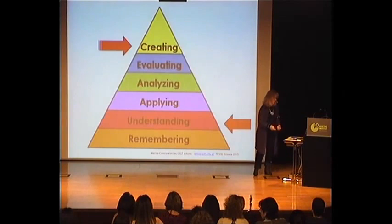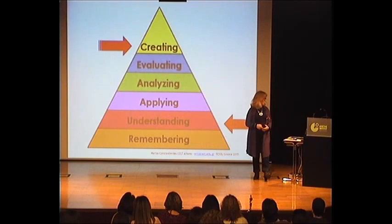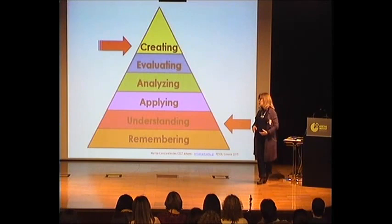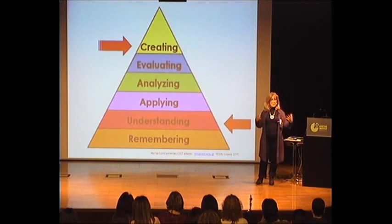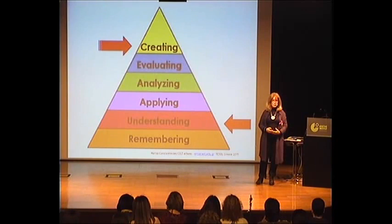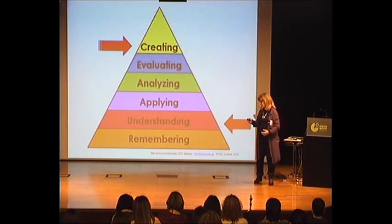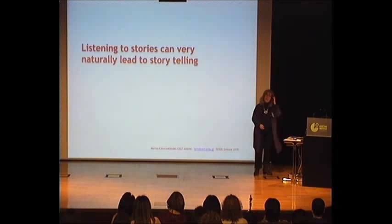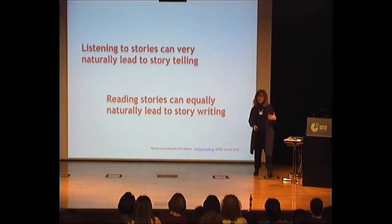If we look at Bloom's taxonomy triangle — which is an amended triangle — at the top you can see 'creating,' which used to be 'synthesis' but has recently been changed. At the bottom you can see 'understanding.' For me, storytelling takes care of both ends of the scale: on the comprehension level, listening and reading; and at the top, creating and telling stories. Listening to stories in the foreign language classroom can very naturally lead to storytelling and speaking activities, and reading can naturally lead to story writing.